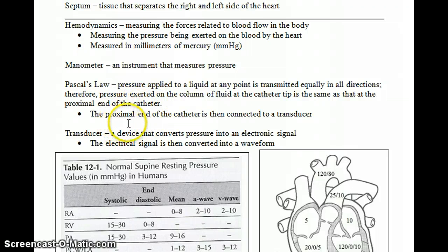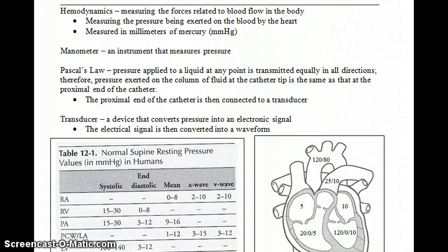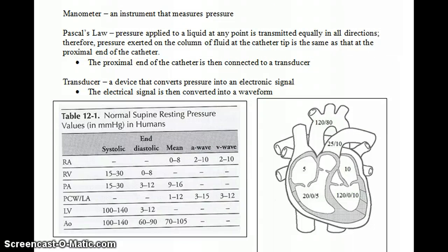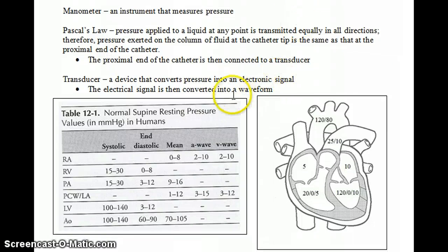So the proximal end, the end closest to us, is then connected to a transducer. And then the transducer is the device that converts that pressure into an electronic signal. And then the electronic signal is then converted into a waveform. Now, this week we are not going to talk about waveforms just yet. Waveforms are a whole other beast that we will tackle soon, but not this week.